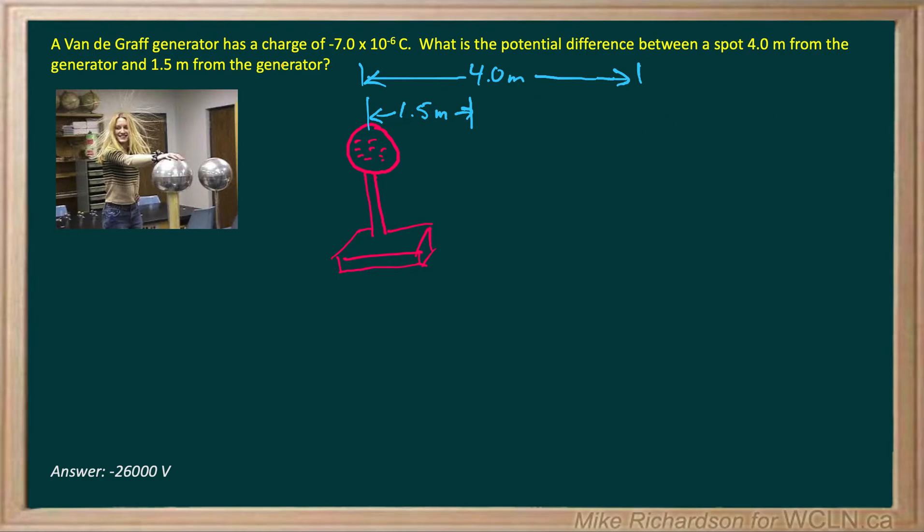Here we have a Van de Graaff generator, and it's given a charge of negative 7 times 10 to the negative 6 coulombs. So all that charge builds up on the dome or this silver part of the Van de Graaff generator. And we can consider that a sphere of charge or a point charge.